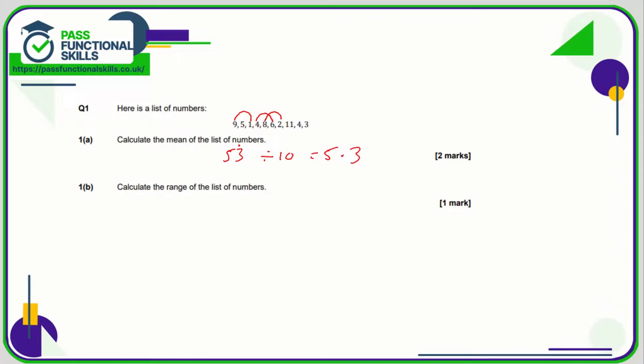The range is the highest value minus the lowest value. The highest is 11 and the lowest is 1, so the range is 11 minus 1, which gives a range of 10.